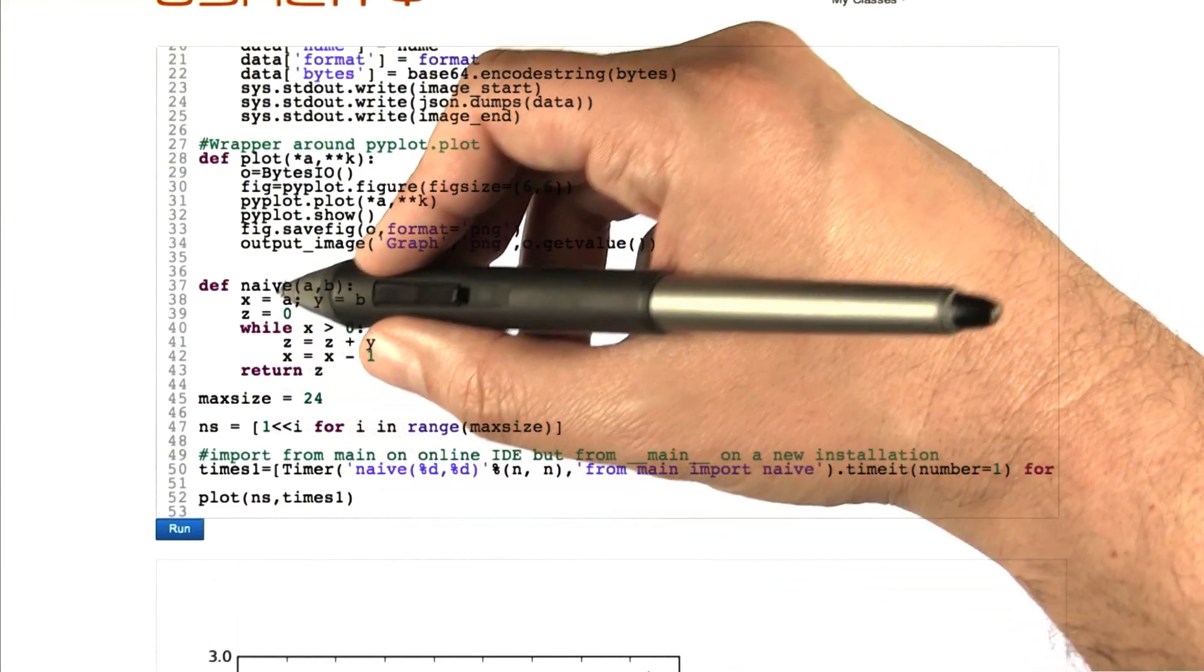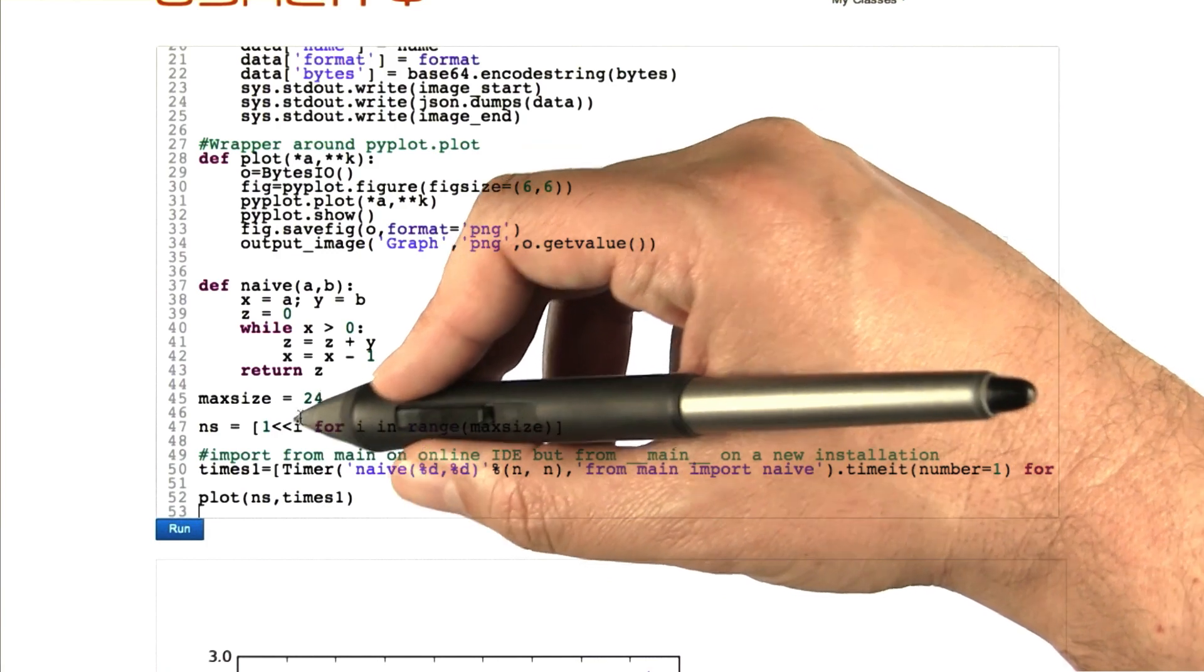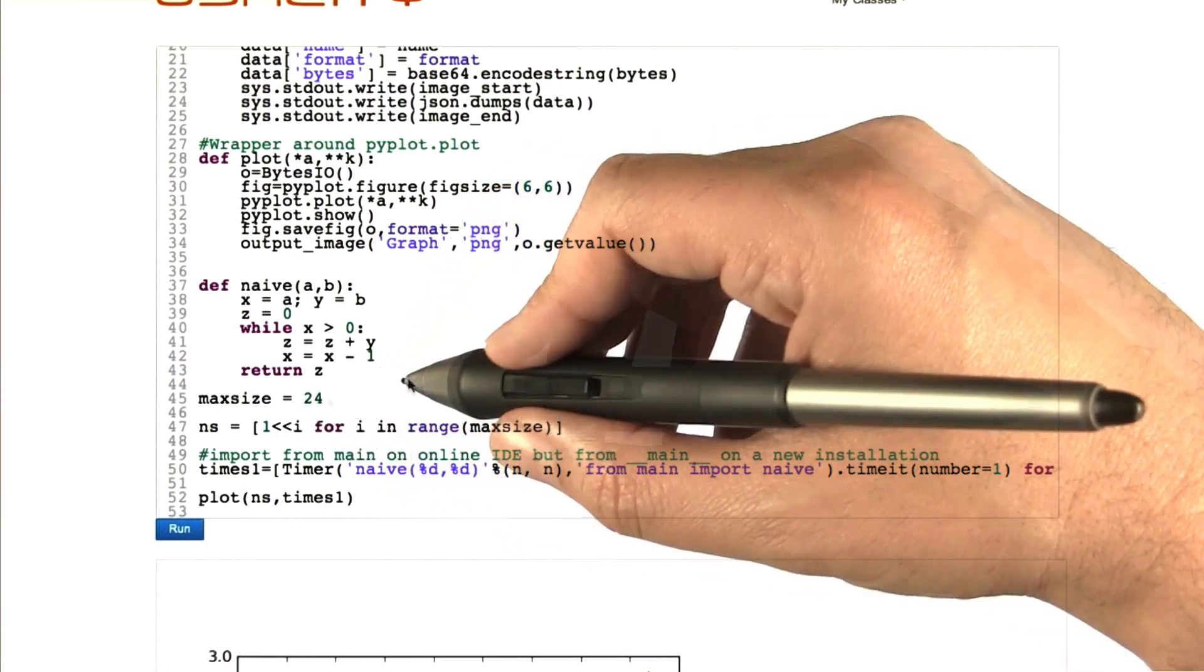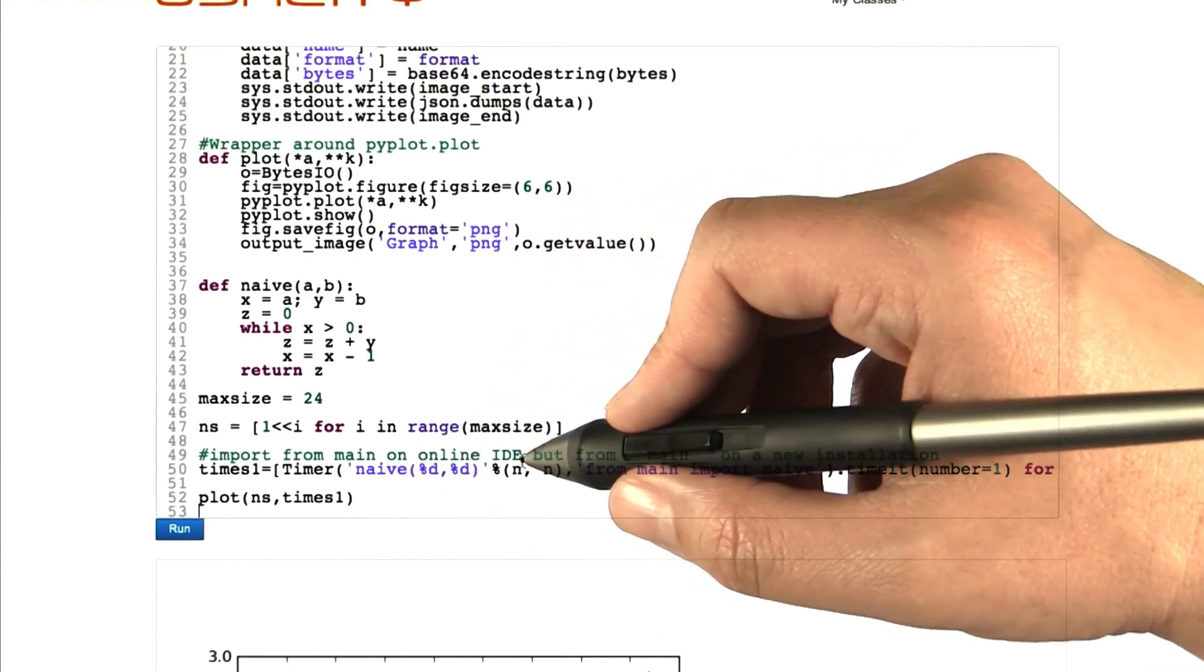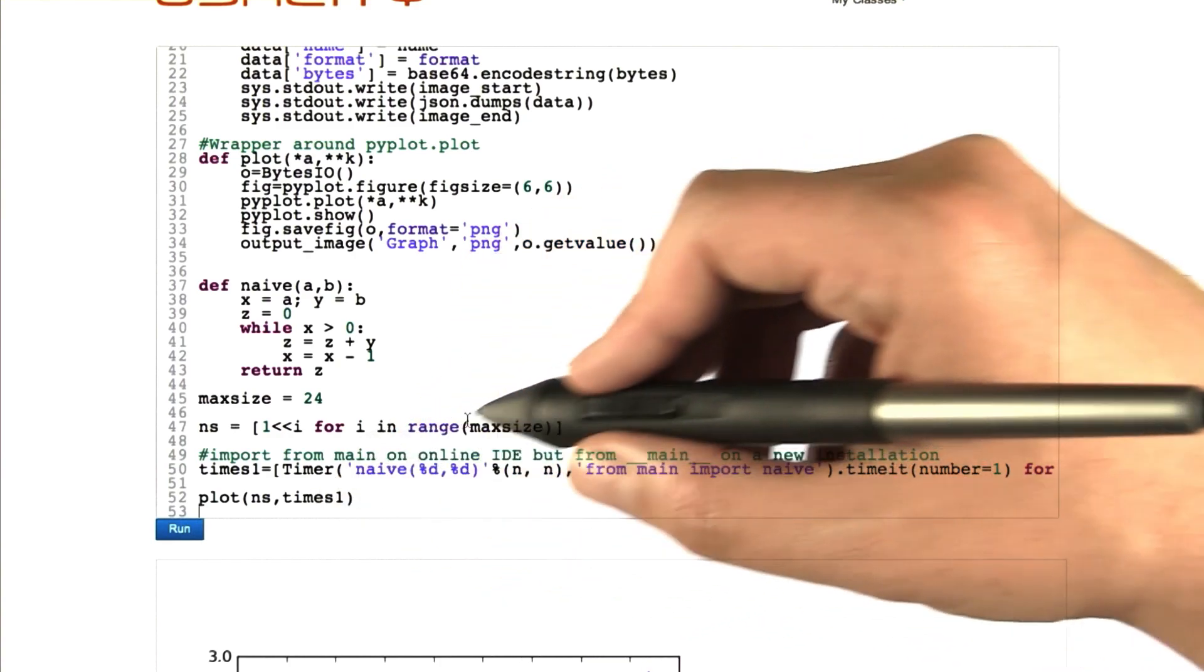What we're going to do is run naive nn with different values of n, and the n's are going to be all the powers of 2 from 2 to the 0 to 2 to the 23. And for each of those, we're going to time how long it takes to do that, gather all those times together, and then plot them.